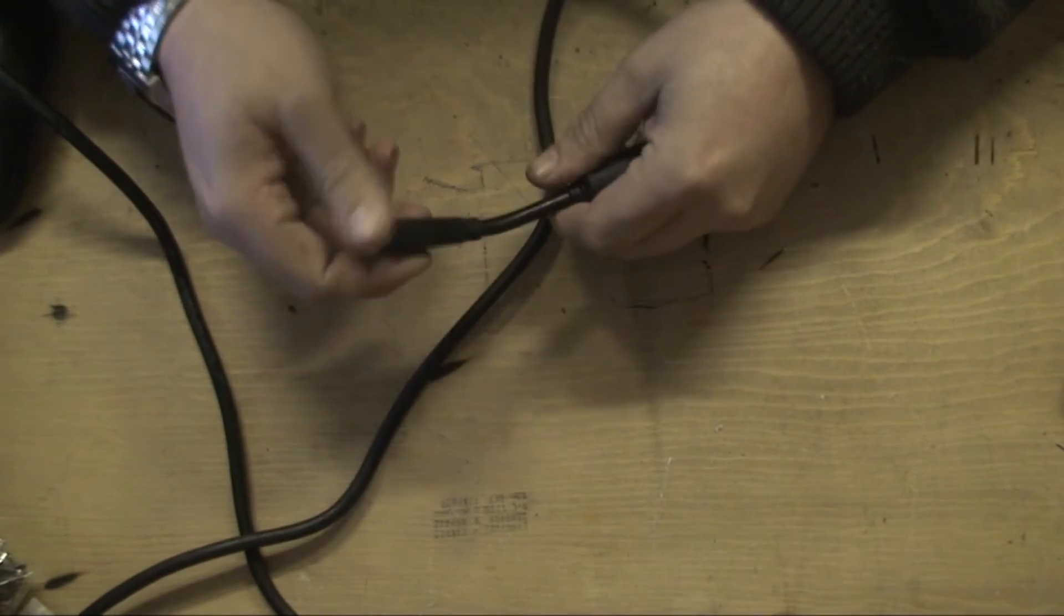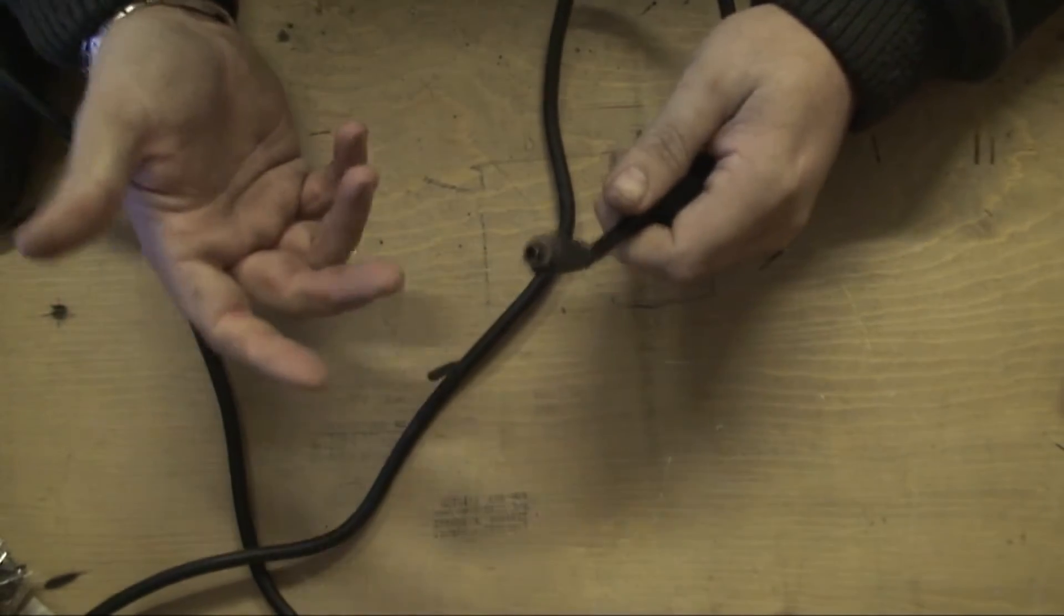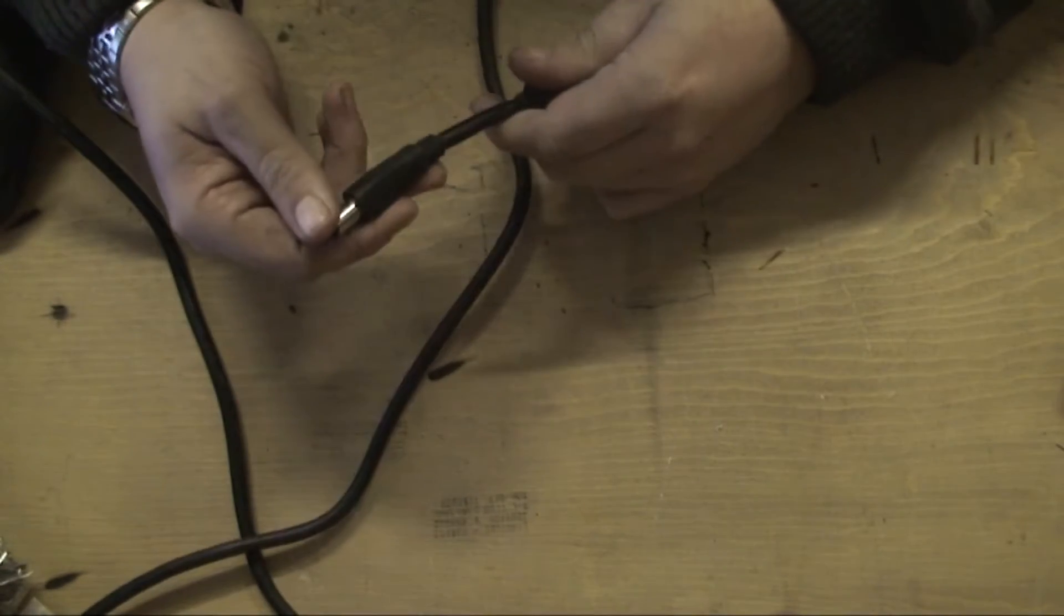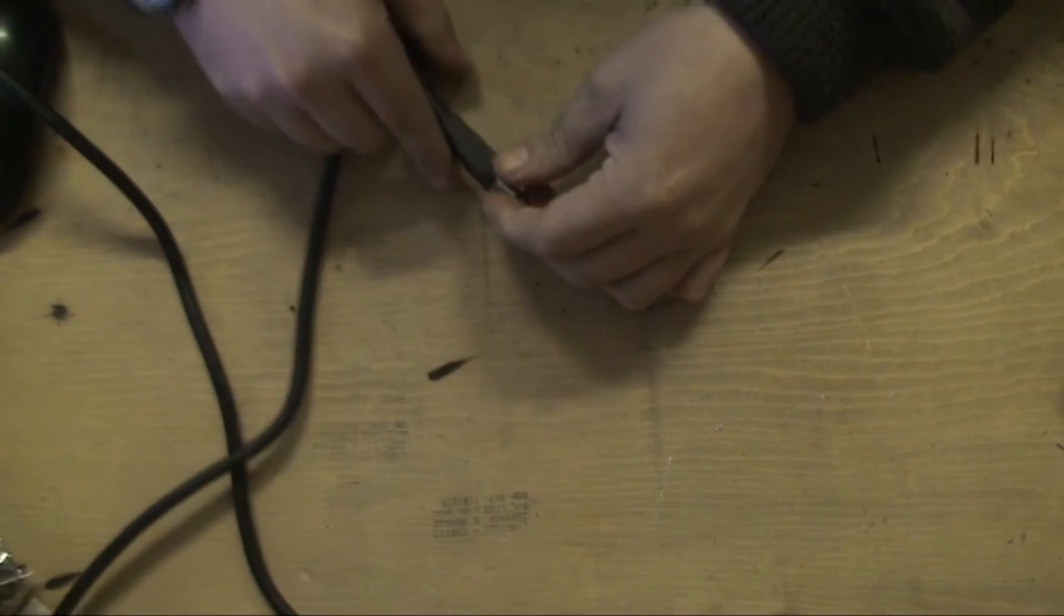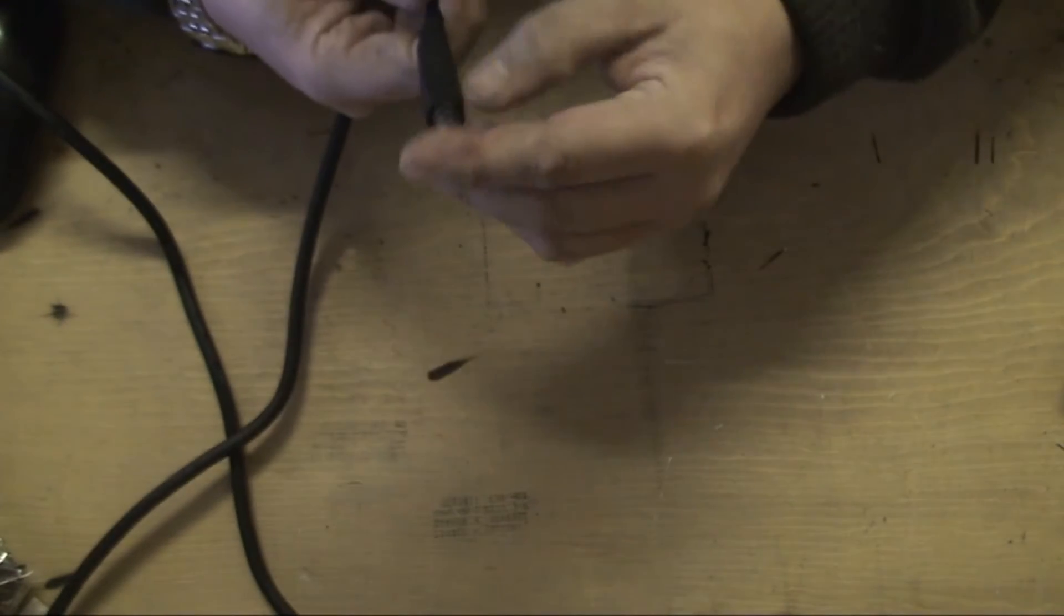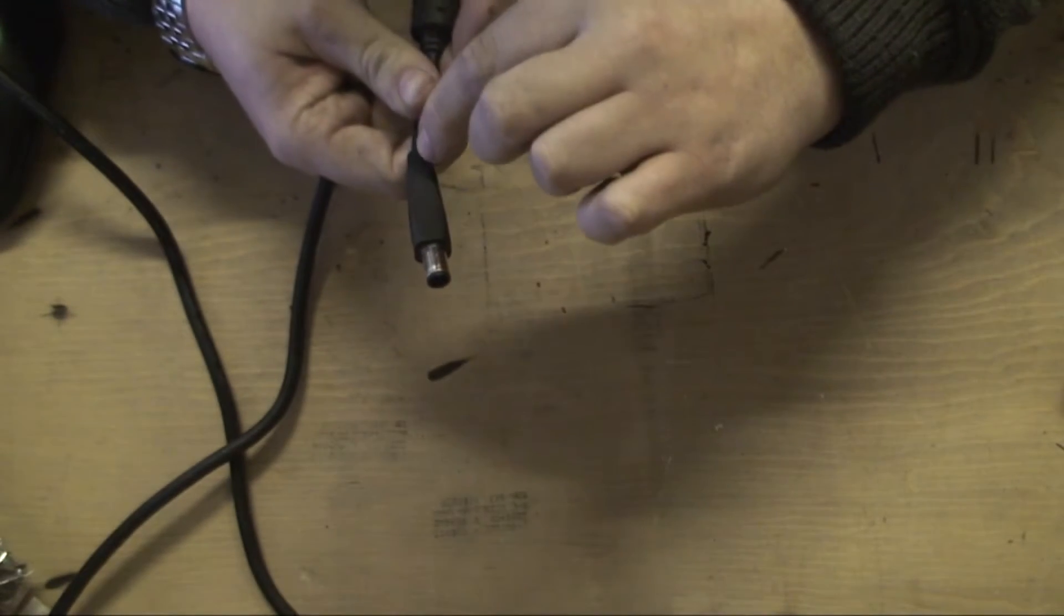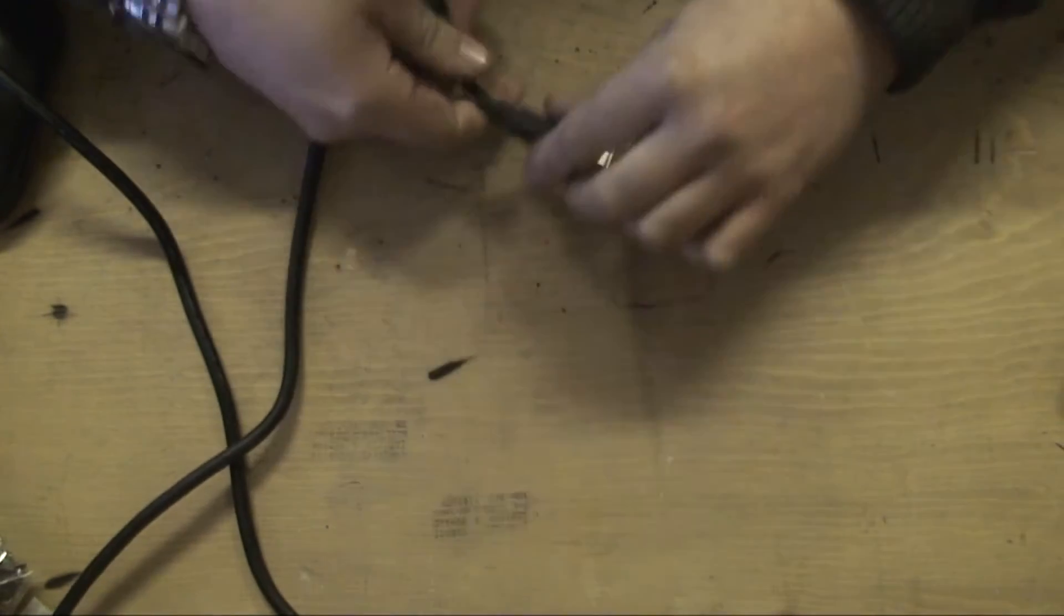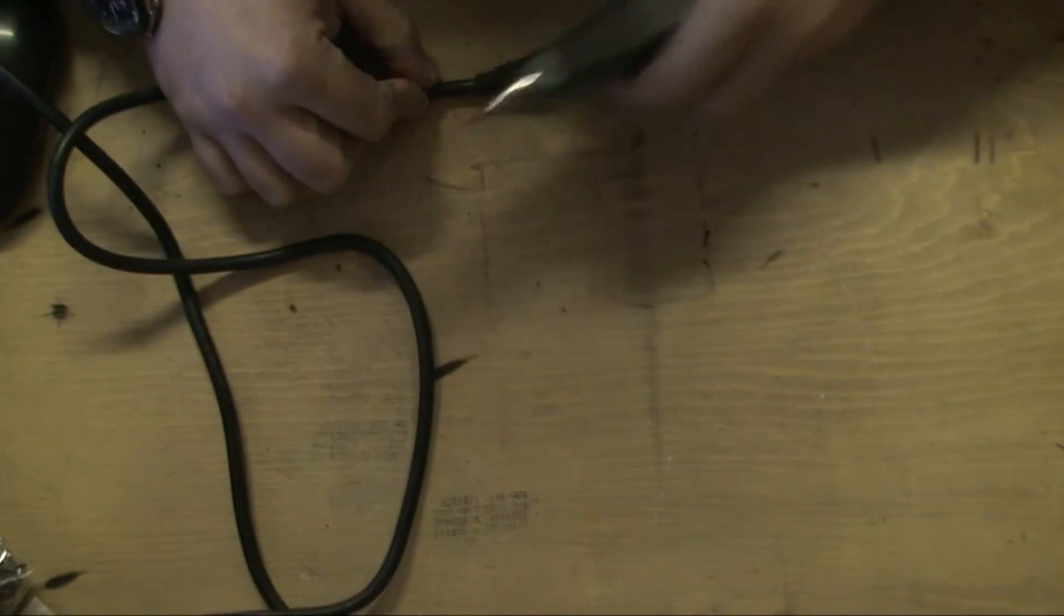With me wiggling the wire and it kind of working, I'm guessing there's a loose connection somewhere, whether it's in the motherboard or in this cable. The first thing to do is this, the easiest thing. This is molded and there's like a little line here, so I'm just going to get a sharp knife and just cut along this line as carefully as I can.